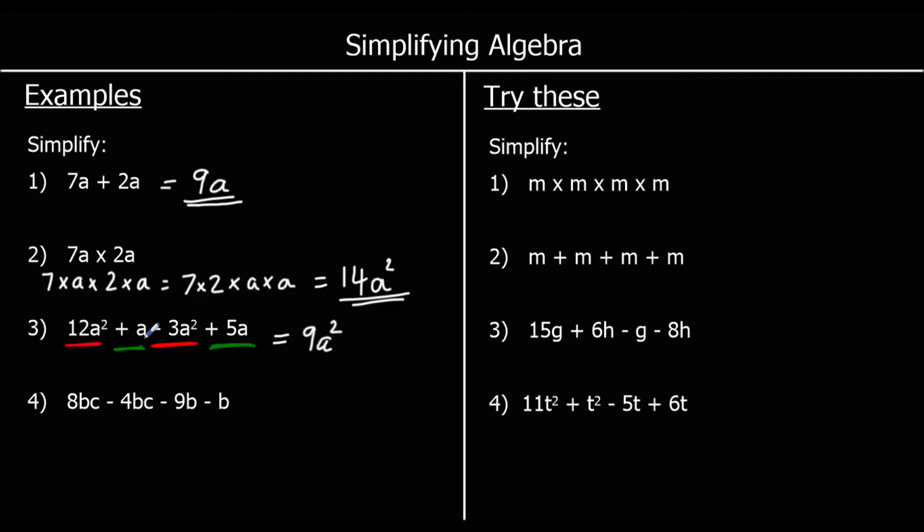And we've got 1a. This is 1a plus 5a's. 1 plus 5 is 6. So we've got 6a's. And for the next one, we've got BC terms and we've got B terms. 8 BC's, take away 4 BC's. 8 take away 4 is 4. So we've got 4 BC's. And we've got negative 9B, take away another 1B. Negative 9, take away 1, is negative 10.